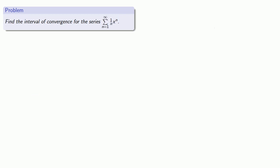Let's take a look at those. Say we want to find the interval of convergence for the series 1 over n times x to the n. Let's apply the ratio test, taking the limit as n goes to infinity of the ratio between two successive terms. At n we have 1 over n times x to the n, and the next term is 1 over n+1 times x to the power n+1.